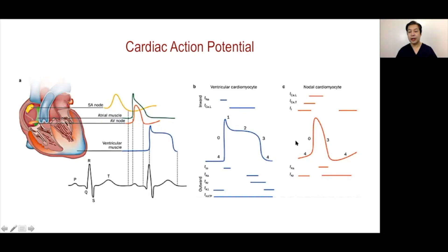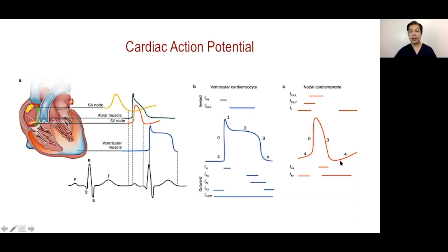In the conduction tissue, the depolarization or phase zero is not as rapid because it is mediated by the fast and slow calcium channel types. Although the fast calcium channel conducts calcium rapidly, it is not as fast as the sodium channel. Phase zero is then followed by repolarization with opening of the potassium channels.